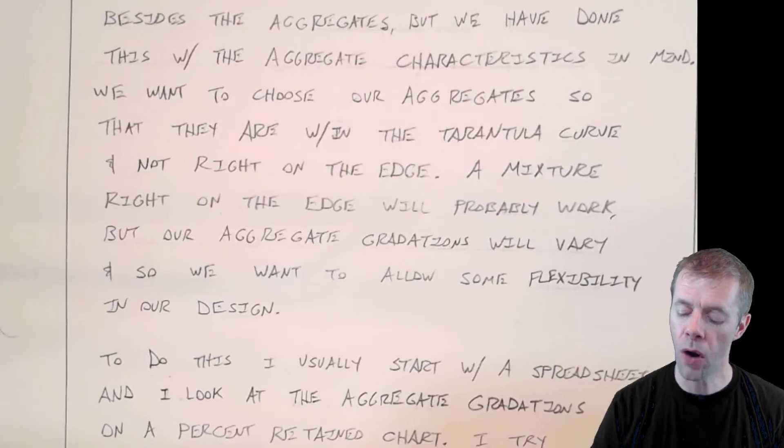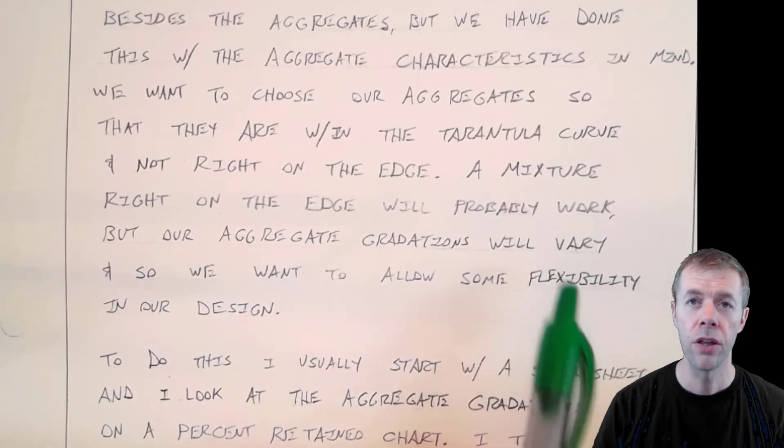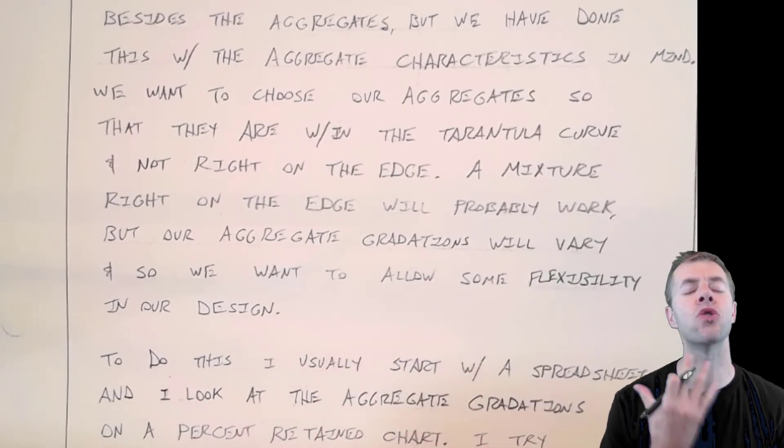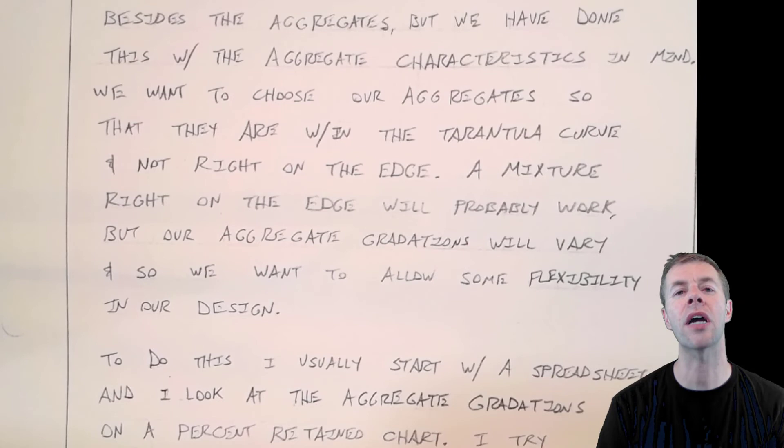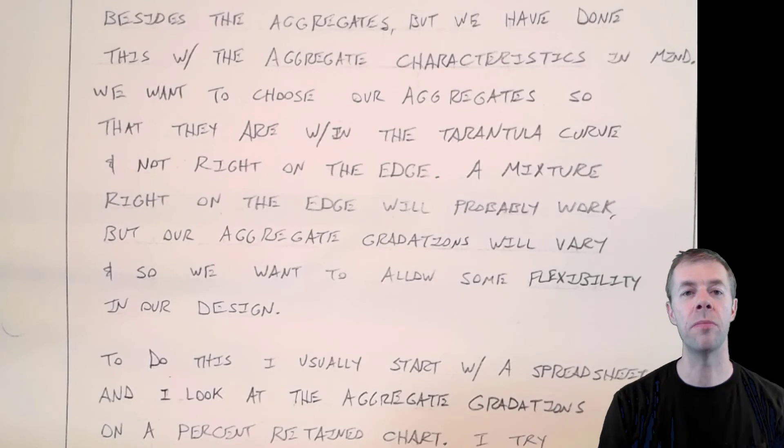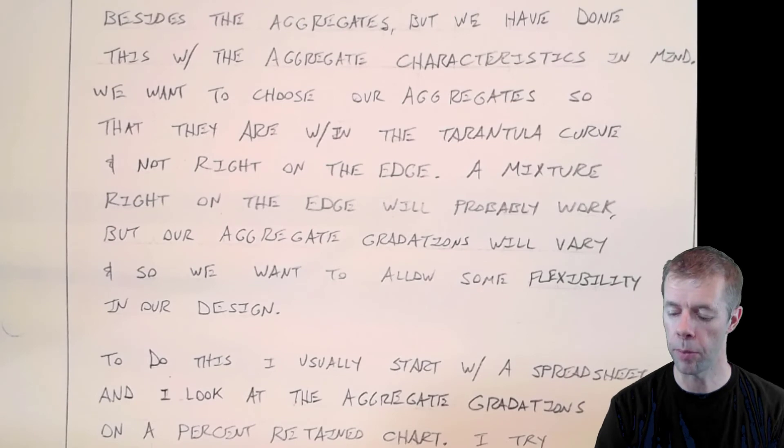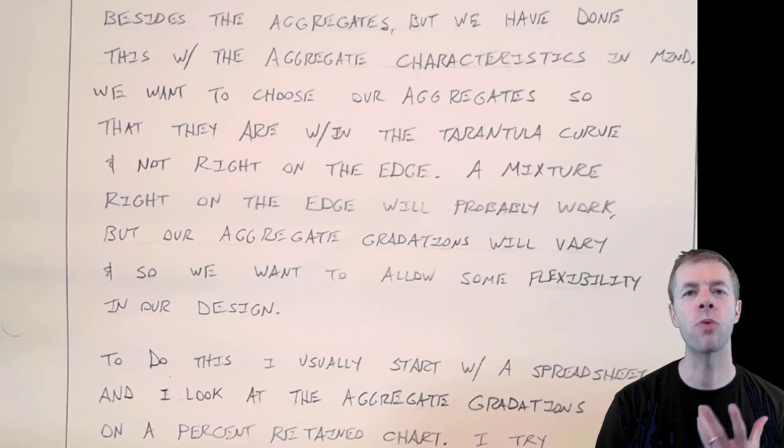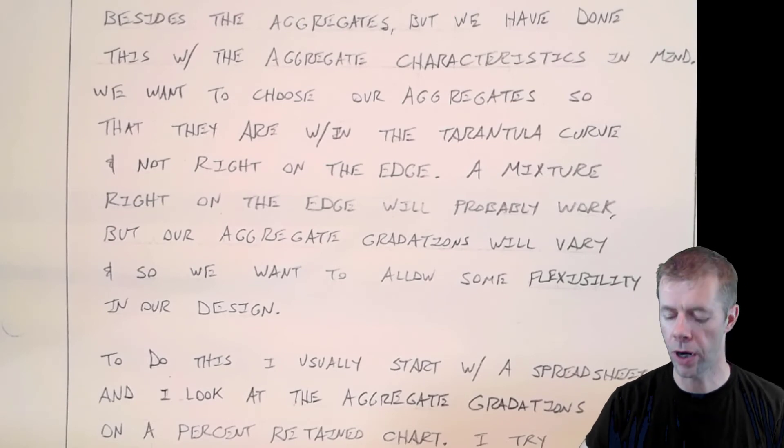How come? Well, because our aggregates are going to probably vary a little bit. The gradations are not perfect. Every single truckload of aggregate to a job site is not going to have the exact same gradation. And so, you want to be a little bit away from the edge. So, when this variability happens, you don't go over the edge and start to cause you constructability problems. And it gives us more flexibility in how we use our actual designs.